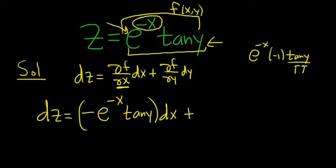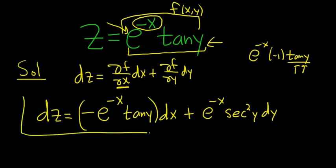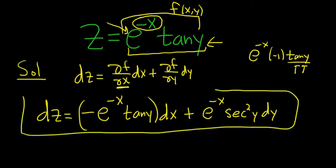Plus, now we have to take the derivative of this with respect to y. The e part is constant, so the derivative of tangent is just secant squared. So it's going to be e^(-x) — it hangs out because it's constant — and then secant squared y dy. And that's it. That's called the total differential.